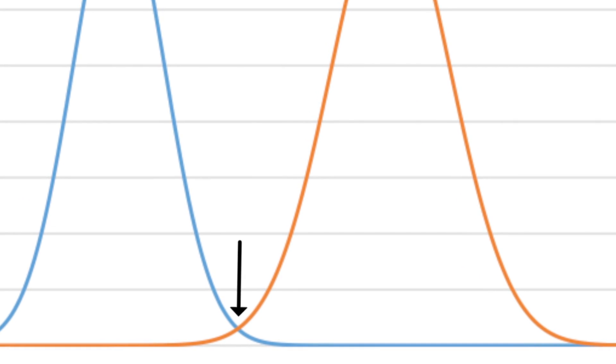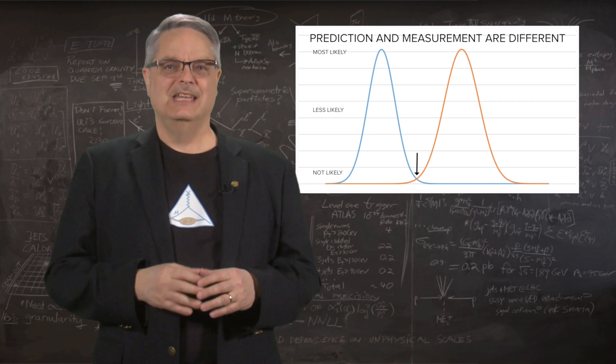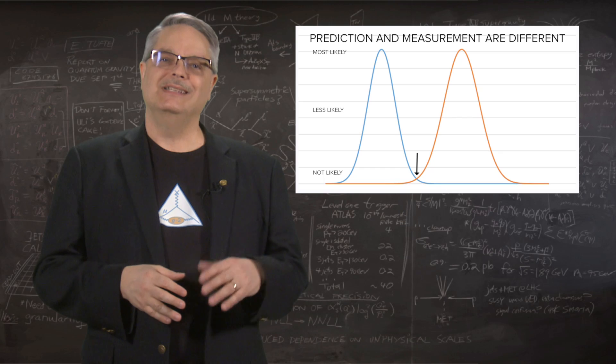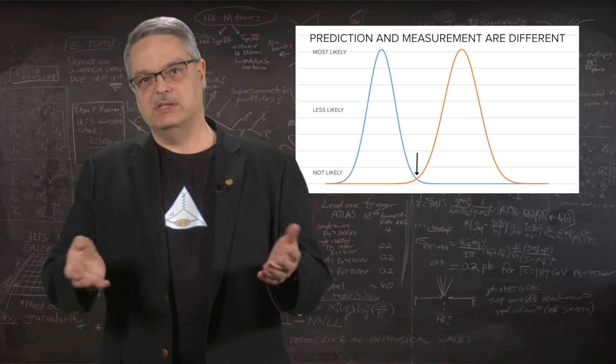On the other hand, the overlap is really tiny. This could be a discovery, or it could be that either the existing calculation or the measurement has an error in it.